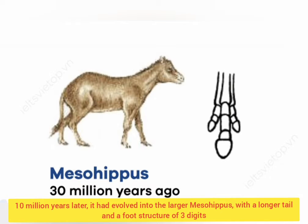Ten million years later, it had evolved into the larger Mesohippus, with a longer tail and a foot structure of three digits.